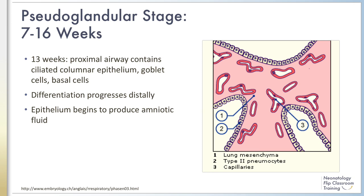By 14 weeks, airway branching is complete and contains about 20 generations that terminate in the primitive respiratory bronchioles, which are beginning to form. Importantly, type 2 pneumocyte precursors begin to differentiate in the terminal bronchioles. The pulmonary vasculature develops in parallel with the differentiating airway. By the end of the pseudoglandular stage, the primitive pulmonary vasculature is present in a pattern that is seen in the fully developed adult lungs.